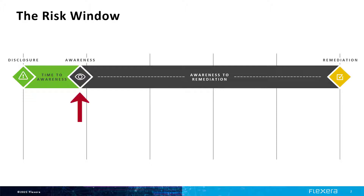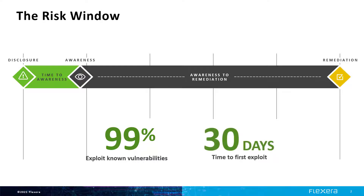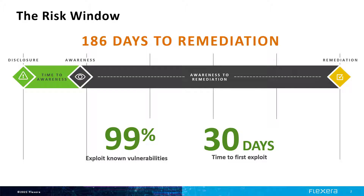The next milestone is when you become aware of it — sometimes this can be quick, but often it's not. The third milestone is the time you have remediated the vulnerability by installing the latest secure version. Most of the time, a patch is available prior to a vulnerability being exploited. It takes about an average of 186 days for a patch to be deployed after it's initially disclosed. During this time, your risk window is open — an attacker can exploit the vulnerability to do harm.